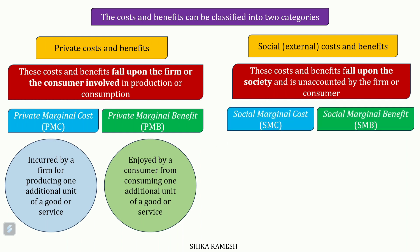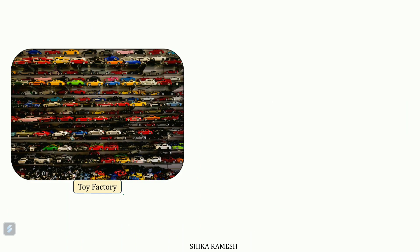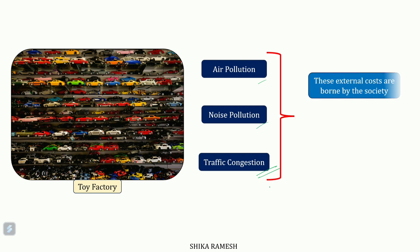These costs are divided into social marginal cost and social marginal benefit. Social marginal cost includes private marginal costs and any additional costs imposed on the society by producing an additional unit of a good or service. For instance, the producer of a toy factory incurs marginal cost for each additional toy produced, and each extra toy also creates negative externalities such as air pollution, noise pollution, and traffic congestion from transportation. The production cost is borne by the firm while all these external costs are borne by the society — this is an example of social marginal cost.